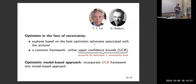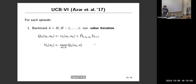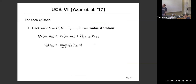Coming back to the model-based approach for online RL: one natural way is to incorporate the UCB framework into the plug-in approach. This leads to the famous algorithm called UCBVI — UCB incorporated into value iteration, done by Azar et al. in 2017. In every episode, I run dynamic programming working backward from the last step, applying the Bellman operator, then add a bonus term representing an uncertainty level — a confidence bound — on top of the standard value iteration.